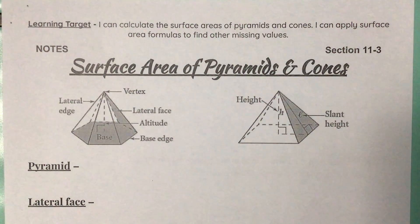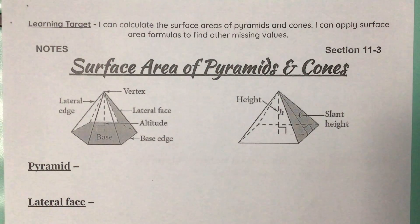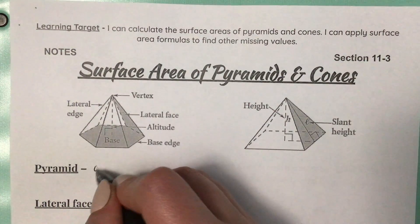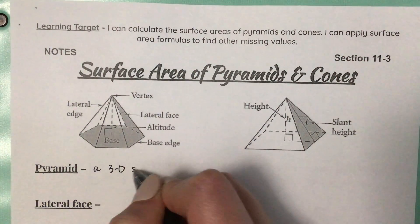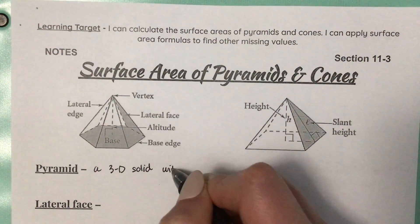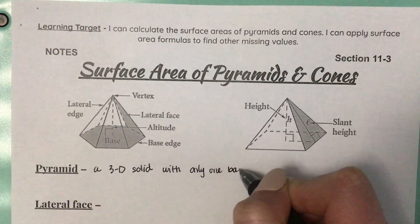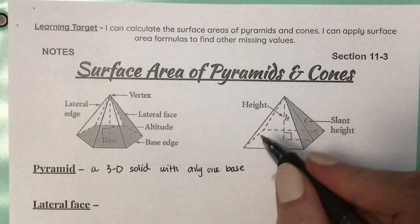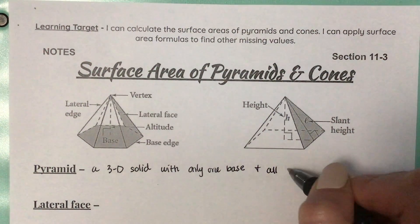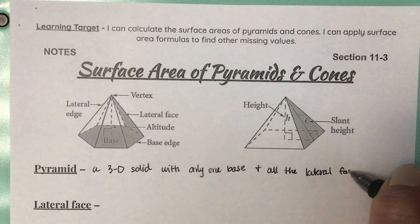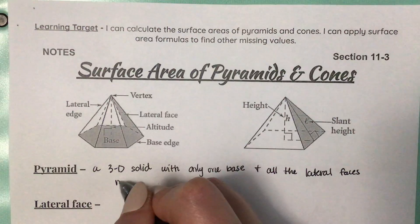Let's get into some vocabulary with pyramids and cones so that we can then start using that vocabulary to apply it to formulas. First of all, what is a pyramid? A pyramid is a 3D solid with only one base, and all the lateral faces meet at a single vertex.